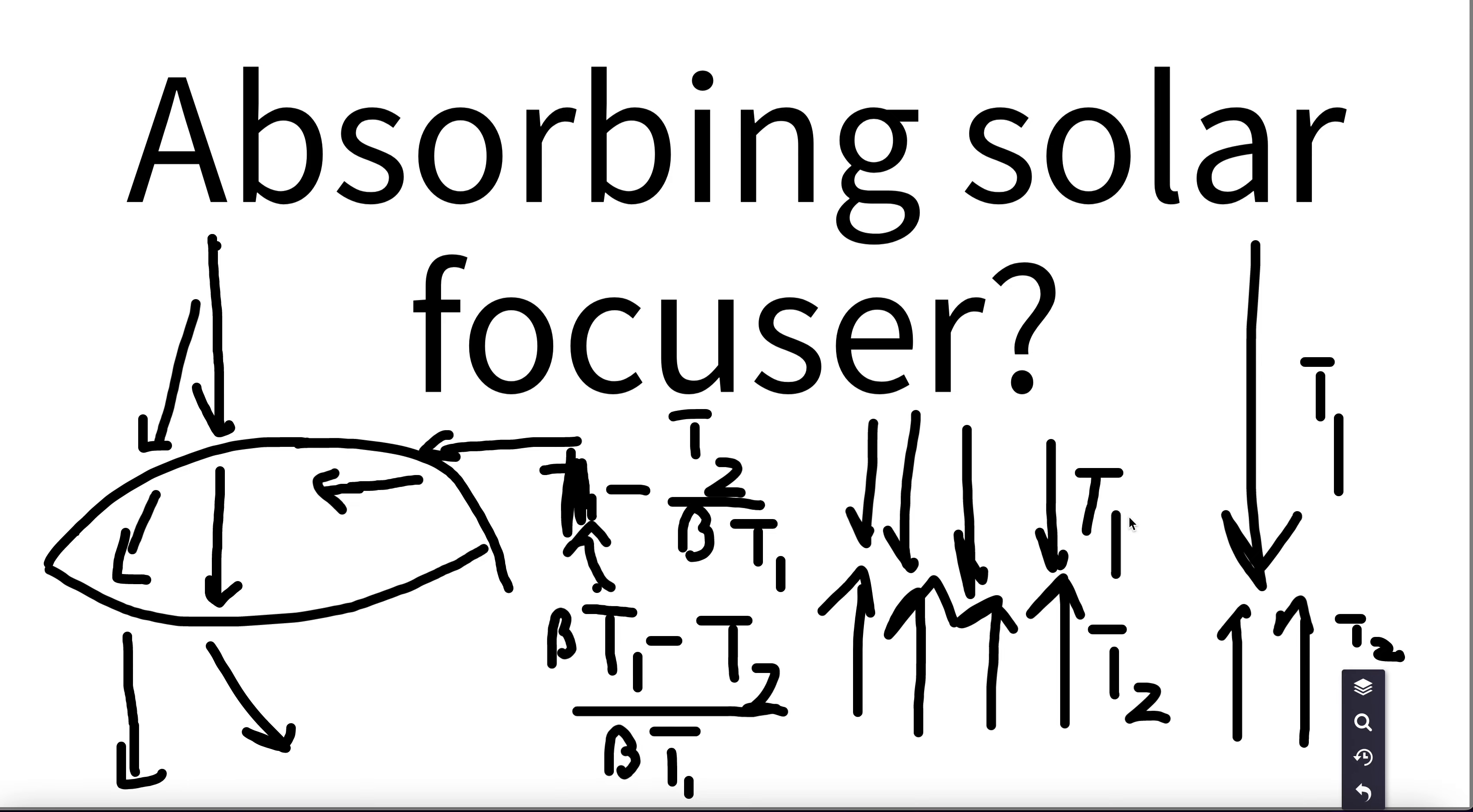But what if we built a solar concentrator out of a material that doesn't absorb the most sunlight, but absorbs some sunlight? And if we make this material that absorbs some sunlight into an actual solar cell itself,